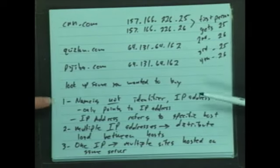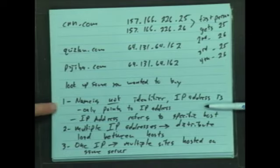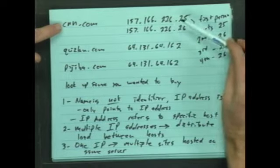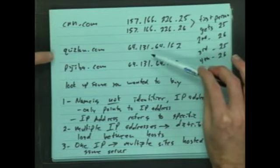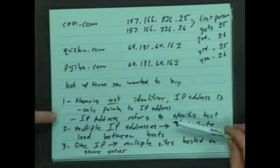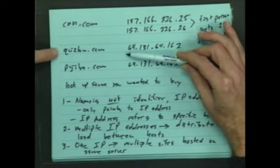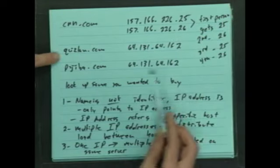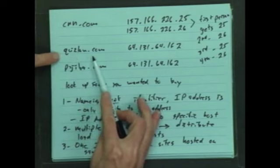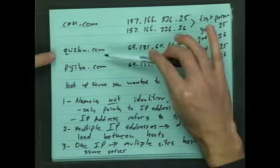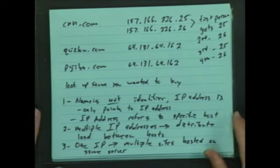So that was fun. So here's our number one rule. The number one finding here is, the name is not the identifier, the IP address is. So when we type in the name, we only get a pointer to this host. And the IP address is what refers to this specific host. We'll see later, very much later, at the end of the class, we'll actually see how we can type in quizlaw.com and get this one IP address and still get a different page back. But we'll worry about that one later.